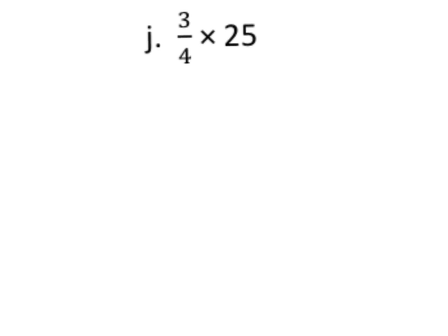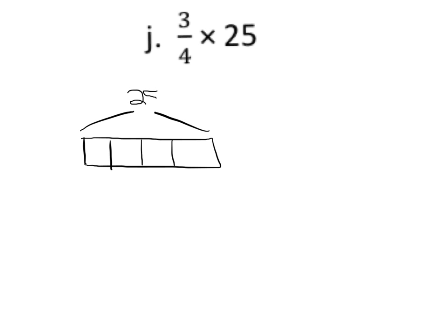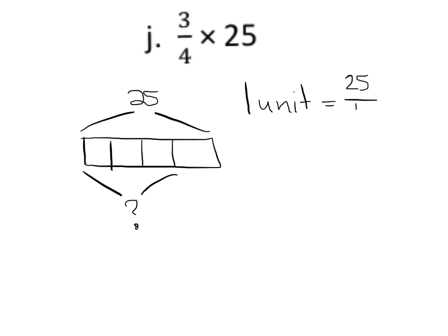Our first problem is 3/4 times 25. We're going to draw a tape diagram, and because the denominator is 4, we're going to chop it up into fourths. That entire tape represents the number 25, and we want to know what is 3/4 of 25. The first thing we need to do is figure out the value of 1 unit.